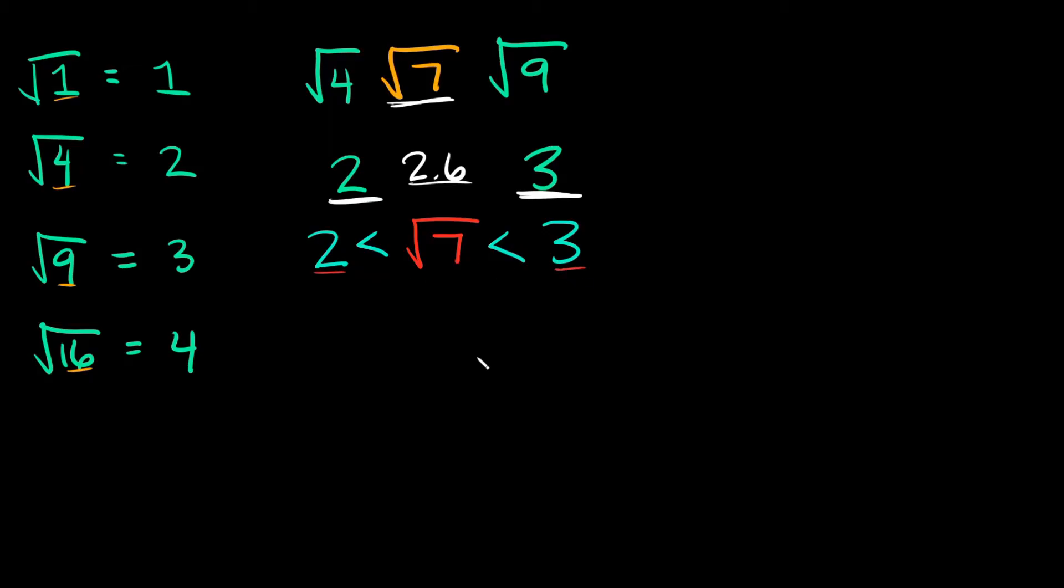That's how you can estimate or get a ballpark answer of a square root that you don't know. The trick is just using square roots that you do know, because I know what the square root of 4 is and I know what the square root of 9 is.